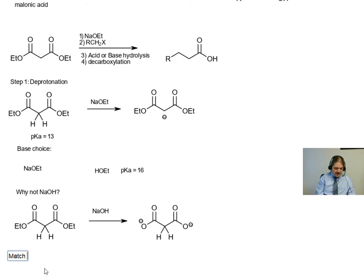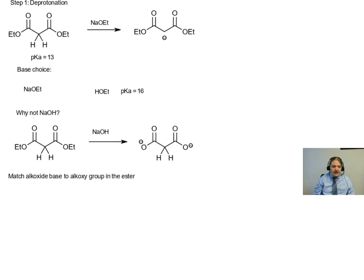So when we think about base choice for the malonic ester synthesis, we want to match the alkoxide base to the alkoxy group in the ester. We do the same thing when we pick a base to do the Claisen condensation. So there's more of this discussion in the video on the Claisen condensation. But if we were working with this ester which has methyl groups, it's a methoxy ester, then we would choose sodium methoxide as our base to deprotonate dimethylmalonate.